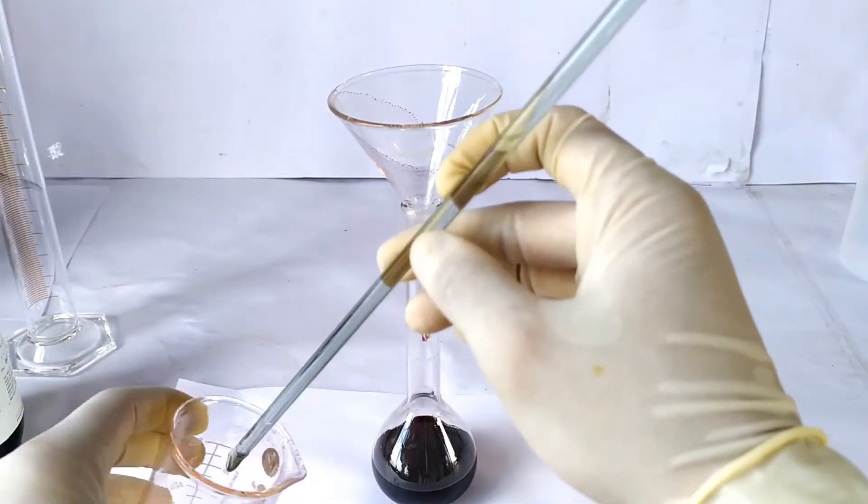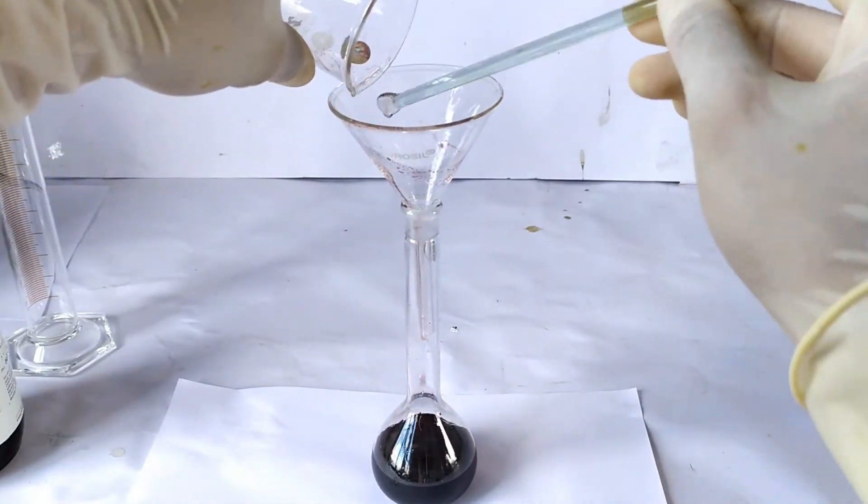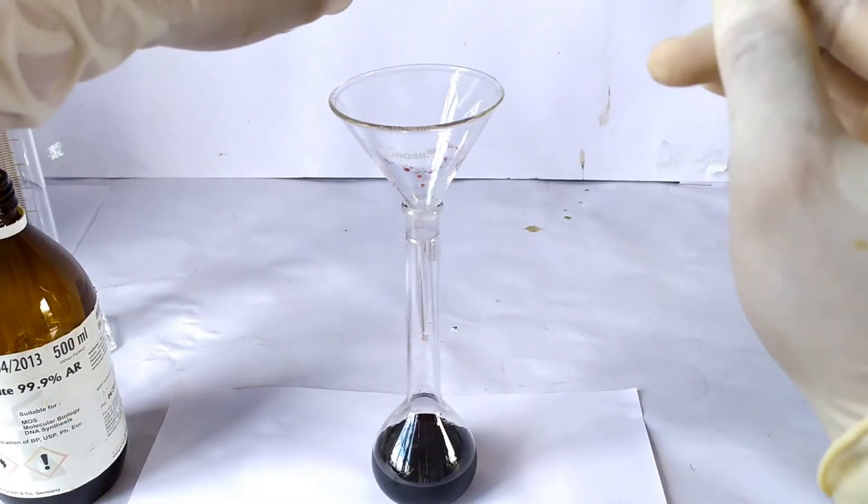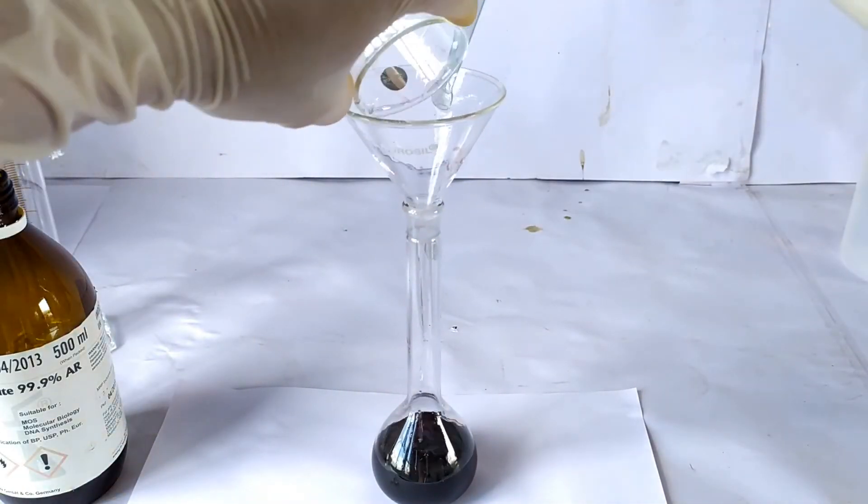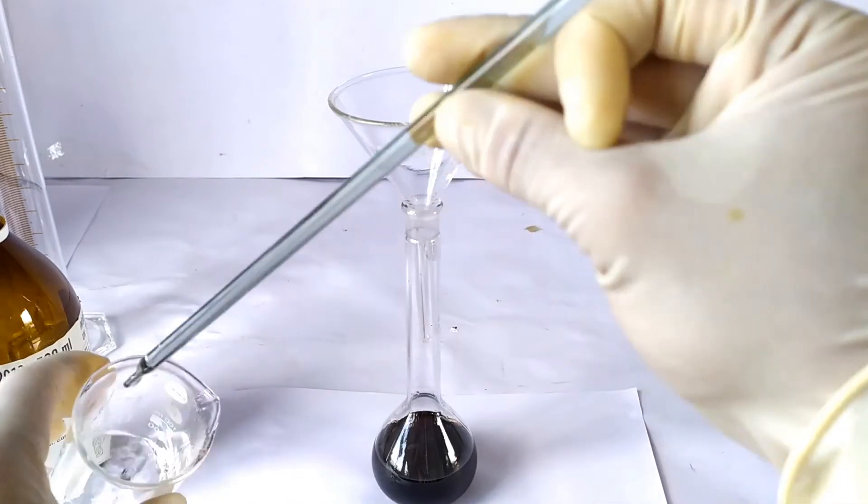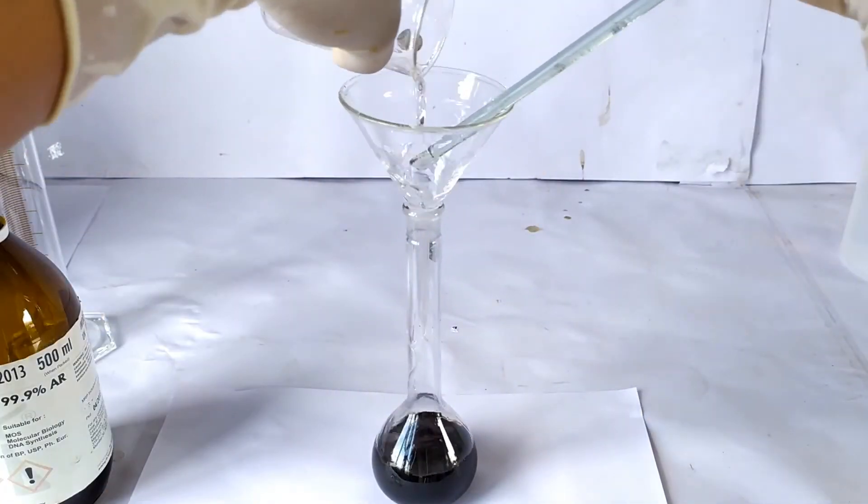Rinse the beaker, the stirring rod, and the funnel a few times using minimal quantities of the chosen solvent, in this case 95% ethanol, and transfer the washings into the flask or cylinder. This ensures complete transfer of all traces of the reagent into the flask.